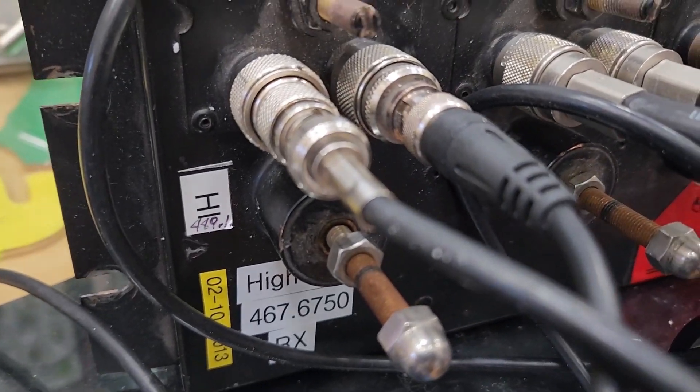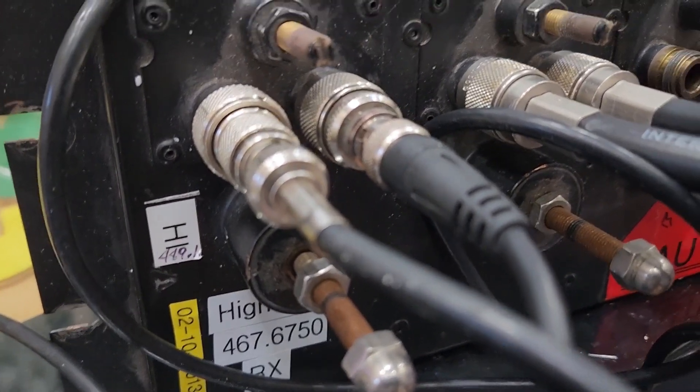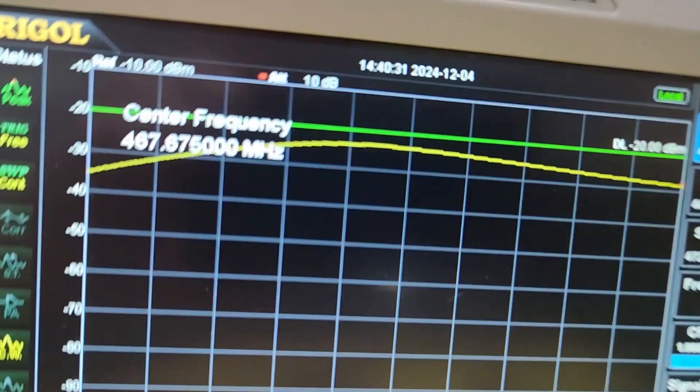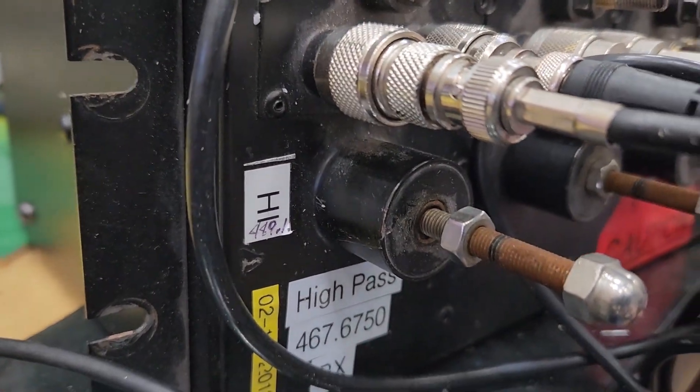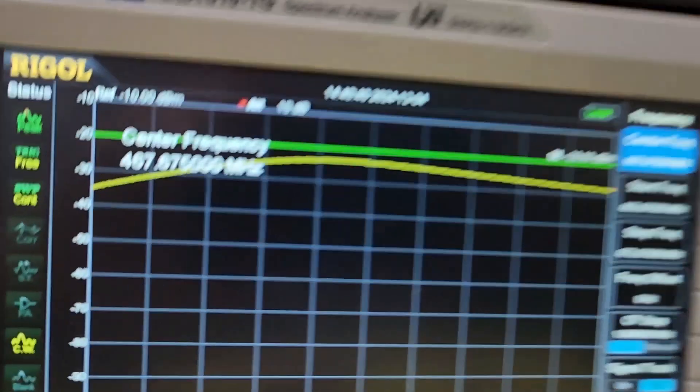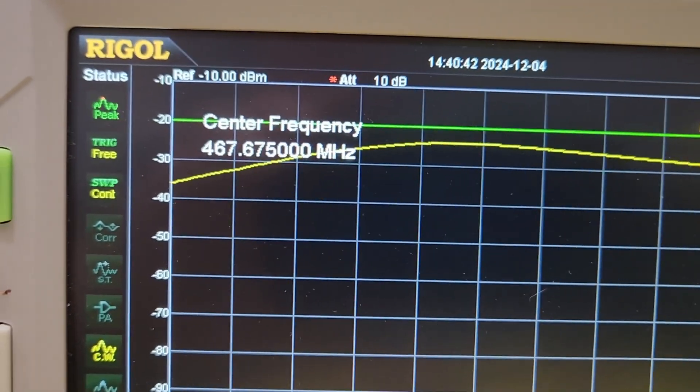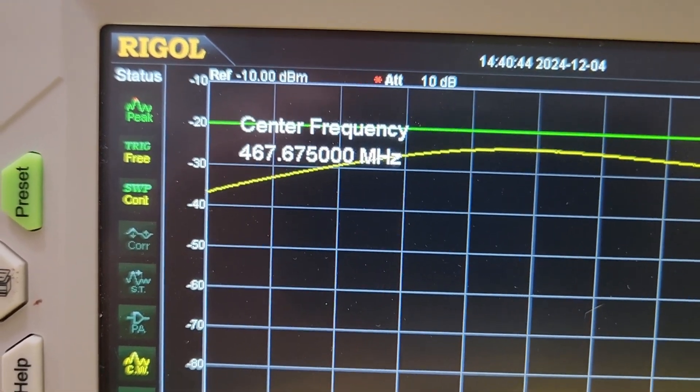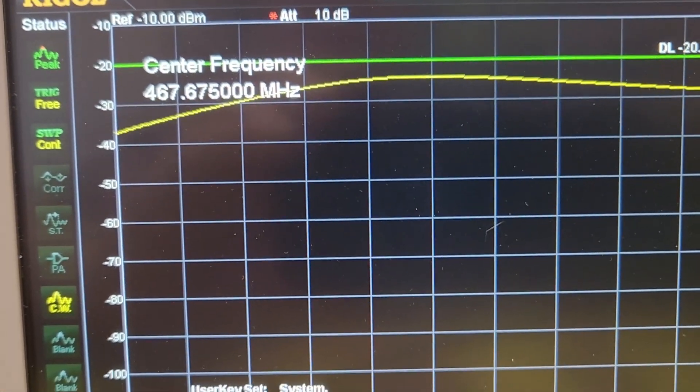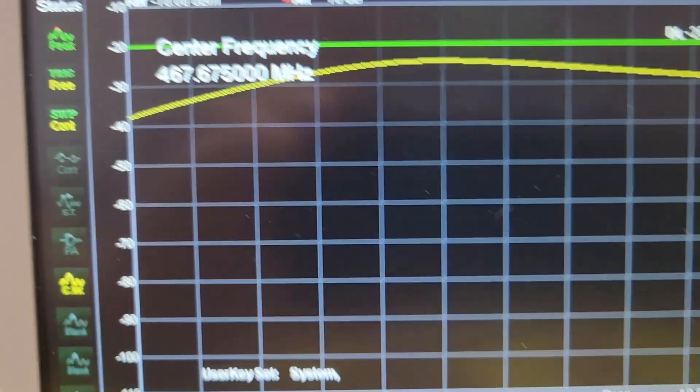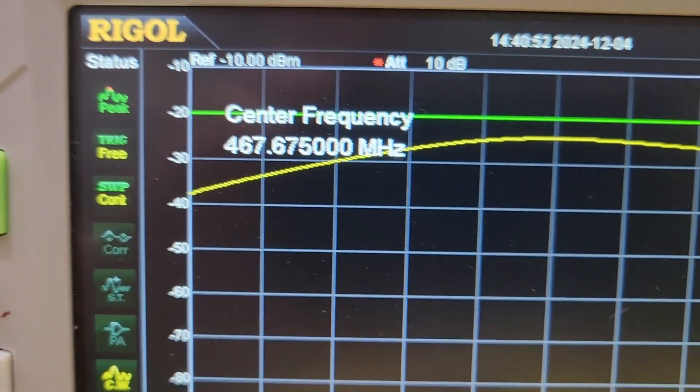Now for the high pass. I've already tuned it somewhat - forgot to start the video again - so we're pretty close to there. We're going to tune the high pass side of it. We want 467.675, and we're about there with that.